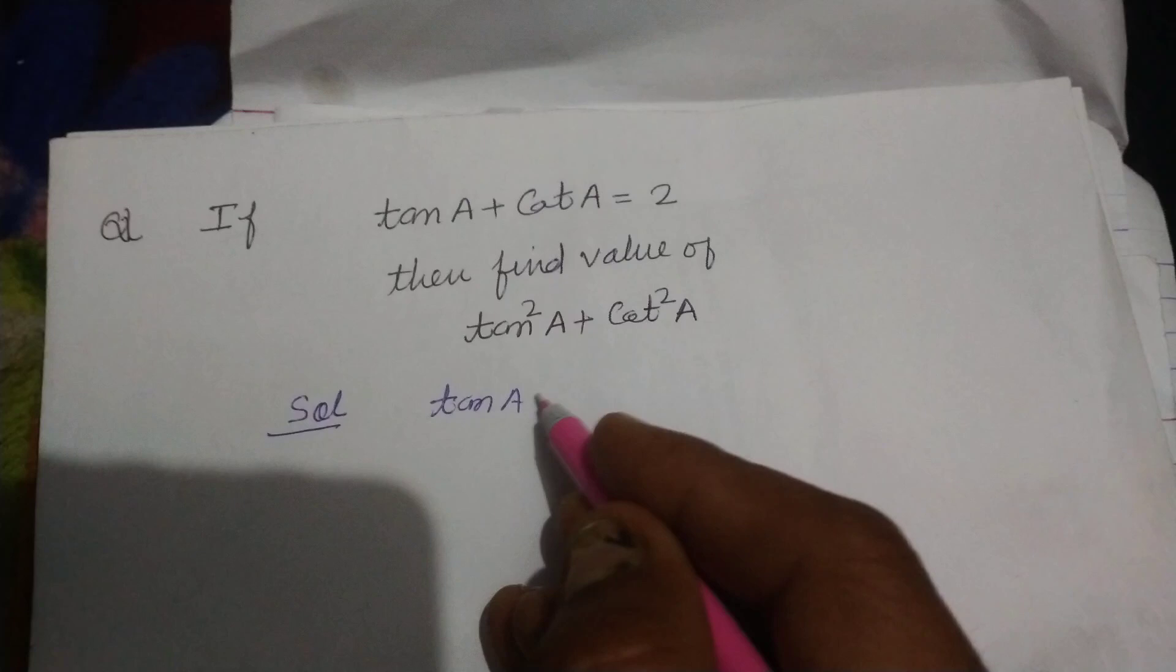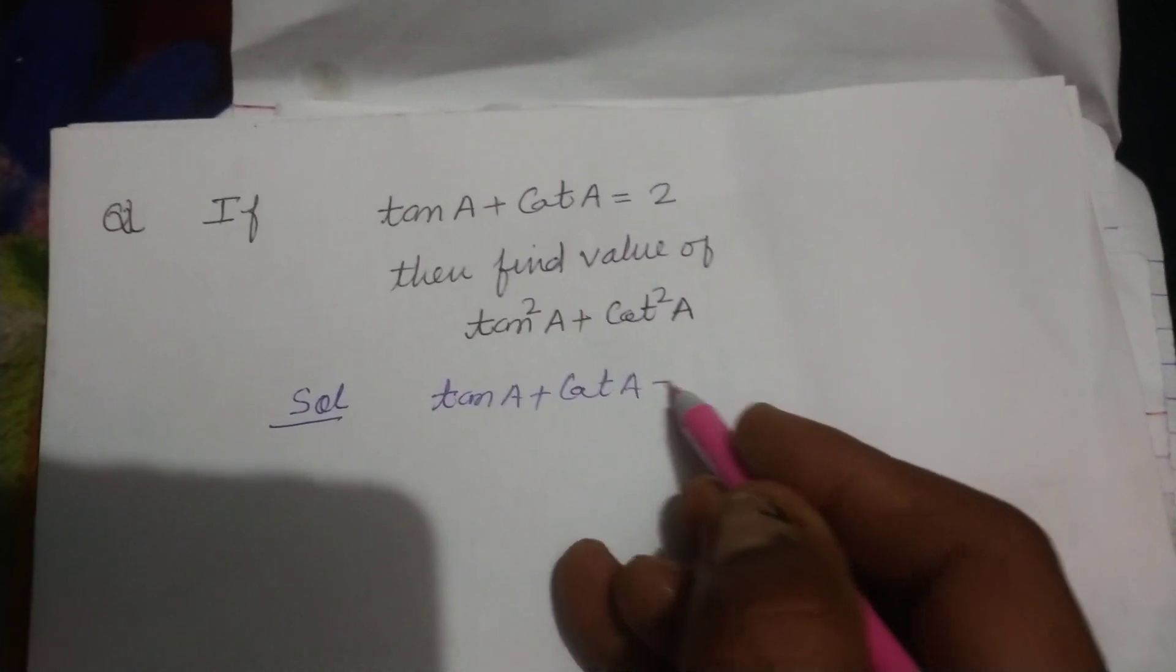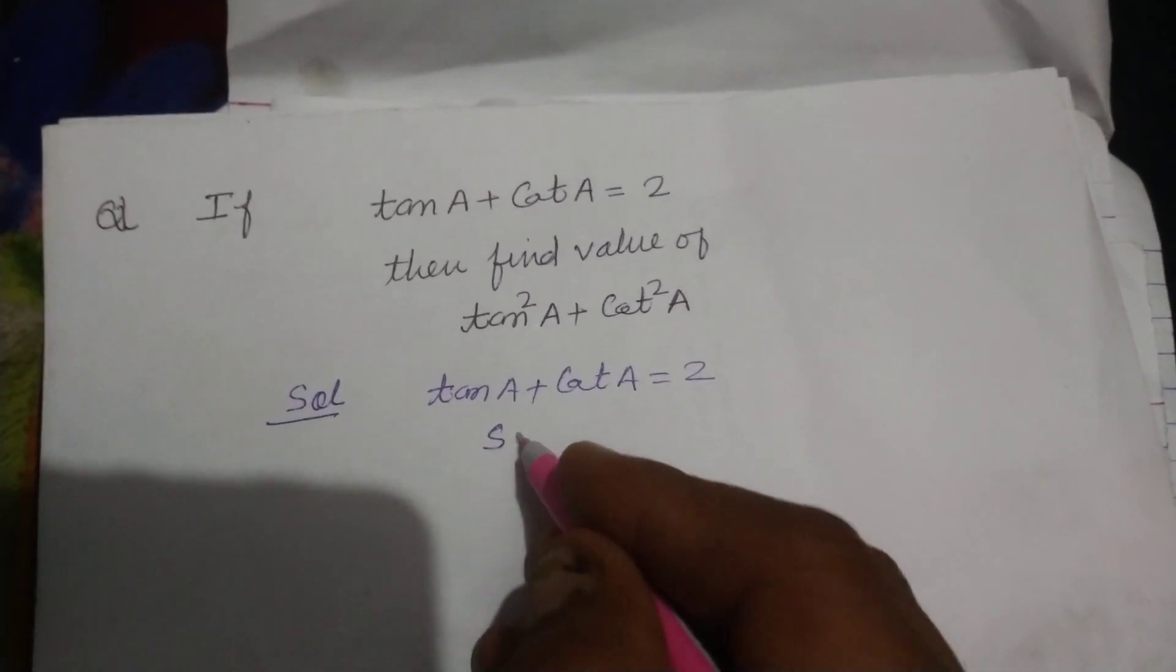So students, we write the given equation: tan A plus cot A equals 2.